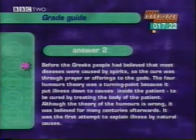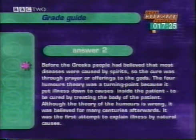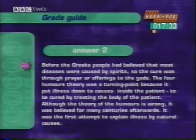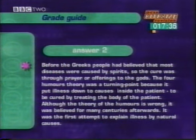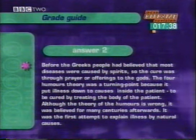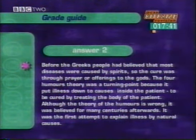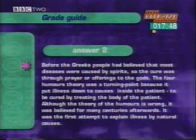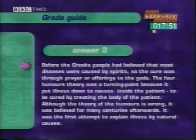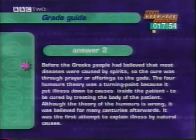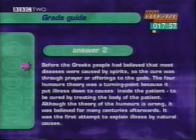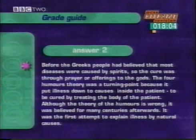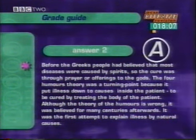Better answer: 'Before the Greeks, people believed that most diseases were caused by spirits, so the cure was through prayer or offerings to the gods. The four humours theory was a turning point because it put illness down to causes inside the patient, to be cured by treating the body. Although the theory of the four humours is wrong, it was the first attempt to explain illness by natural causes.' This student set the theory in the history of medicine. What is important is not so much that it was believed for 2,000 years, but that it broke away from spiritual explanations to natural and scientific ones. This is the approach we have today. This student could probably look forward to an A grade.